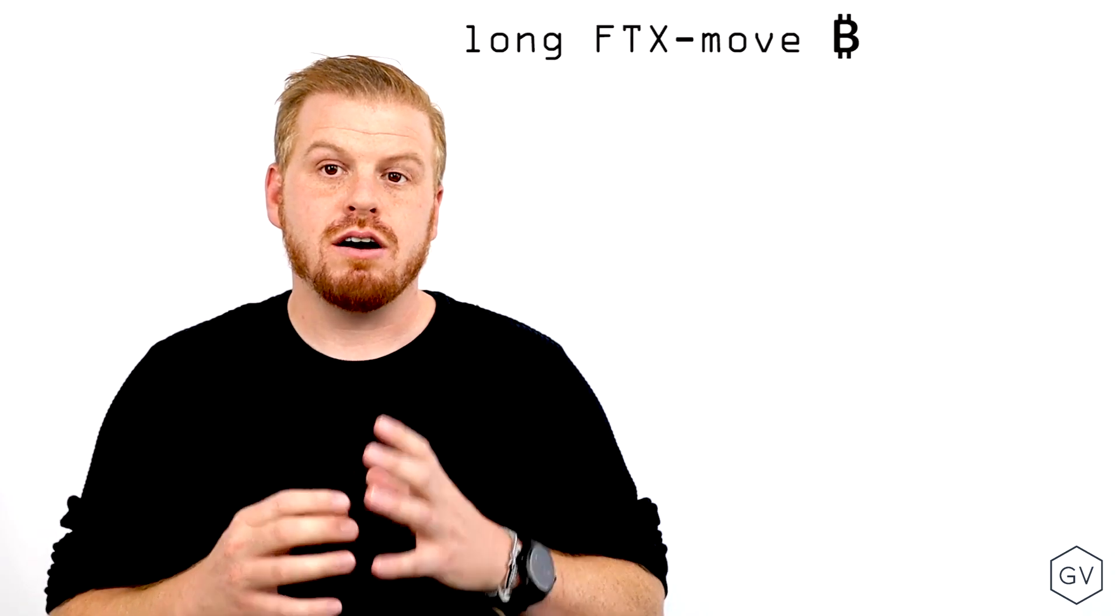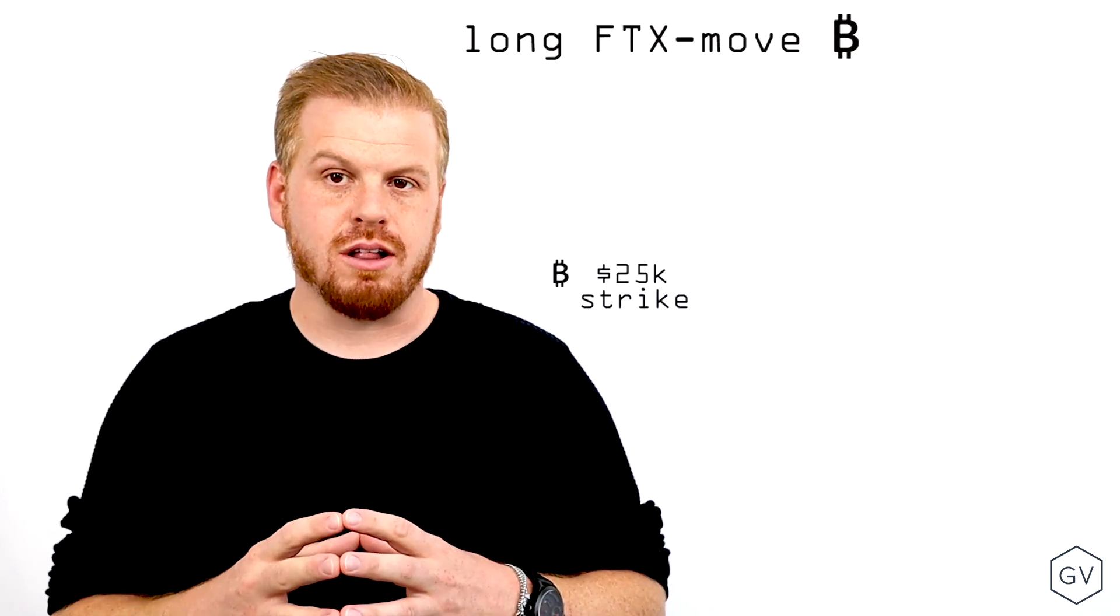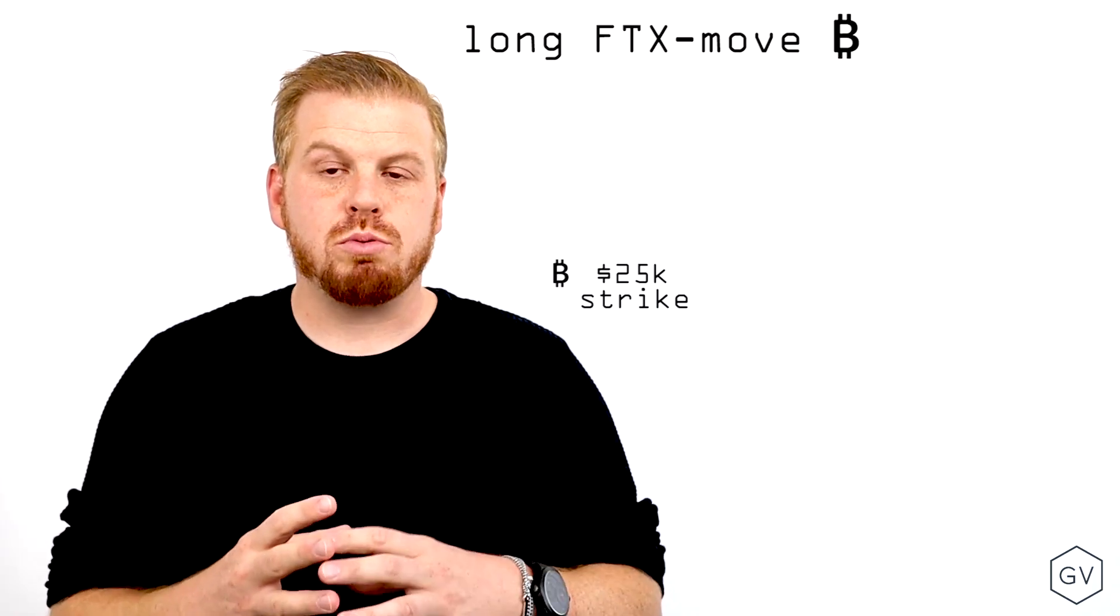Take this as an example. Let's say you buy a move contract today on Bitcoin, and the strike price is struck at $25,000, and Bitcoin today is at $25,000.